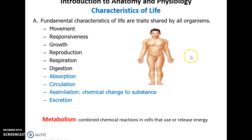Characteristics of life. Movement occurs both inside the body and as the body moves around in its outside environment. Responsiveness is the ability of the body to respond to changes either inside or outside of the body. Growth is the ability of cells to get bigger or to divide, which can lead to the organism getting bigger. Reproduction involves the division of cells into new cells and potentially the production of a new organism.